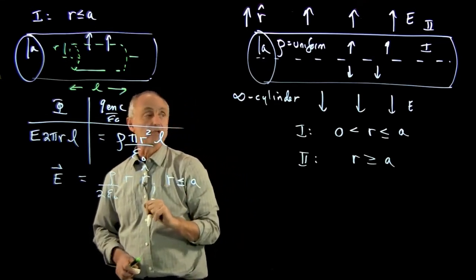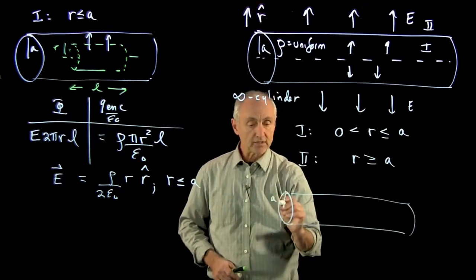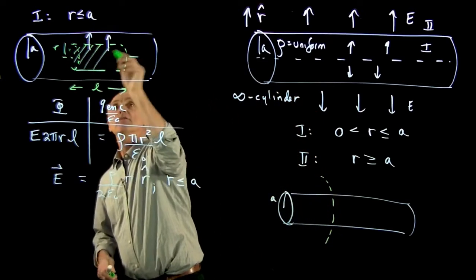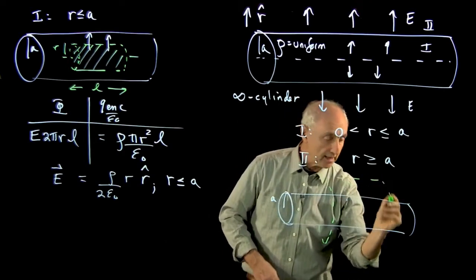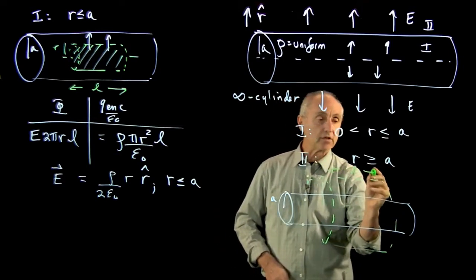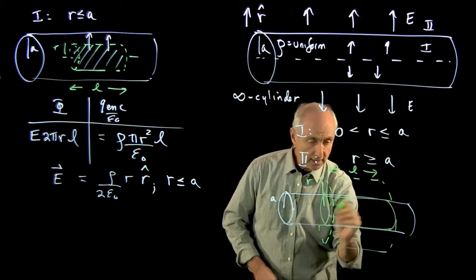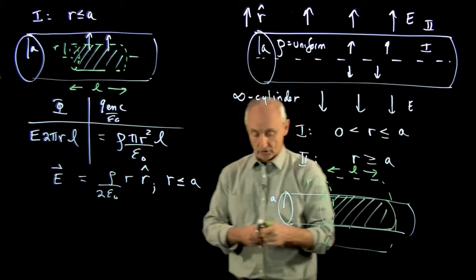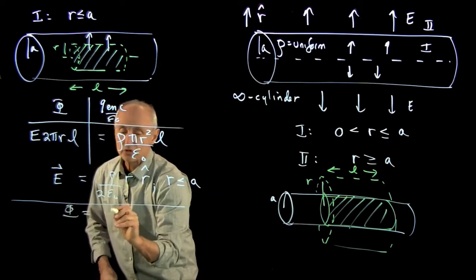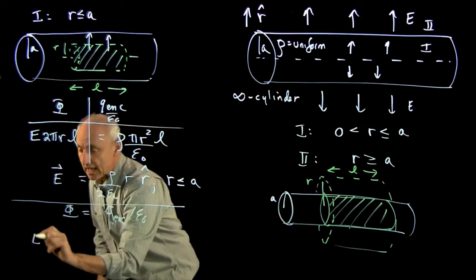Now, for region two, we draw our cylinder of radius a and choose our Gaussian surface at radius r, where r is greater than a, with the same length l. The charge enclosed is all the charge inside the physical cylinder — there's no charge outside the cylinder. When we set the flux equal to the charge enclosed divided by epsilon naught, the flux is E times 2πrl.